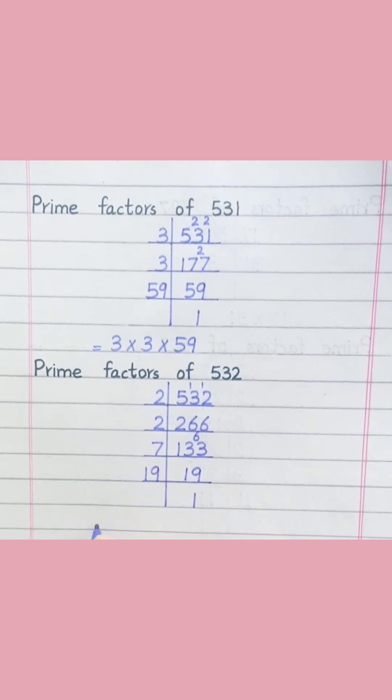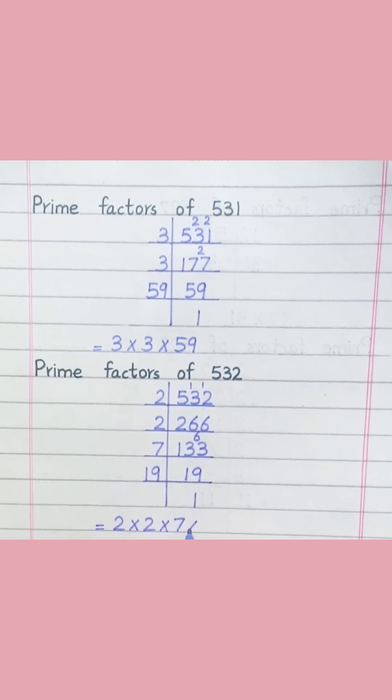532 equals 2 multiply 2 multiply 2 multiply 7 multiply 19.